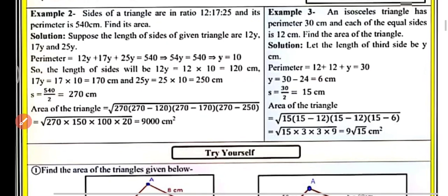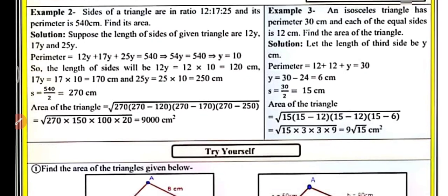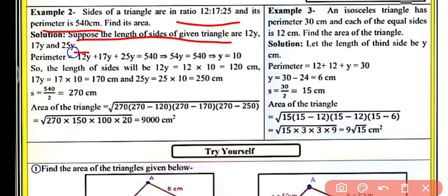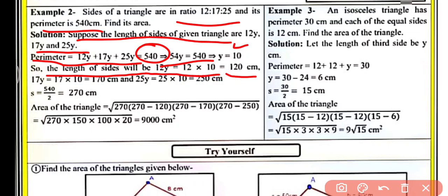Example number two: the sides of a triangle are in the ratio 12:17:25 and its perimeter is 540 cm. Find its area. We assume the sides as 12y, 17y, and 25y. So perimeter equals 12y plus 17y plus 25y equals 540, giving 54y equals 540, so y equals 10. Therefore the sides are: 12 × 10 = 120 cm, 17 × 10 = 170 cm, and 25 × 10 = 250 cm.